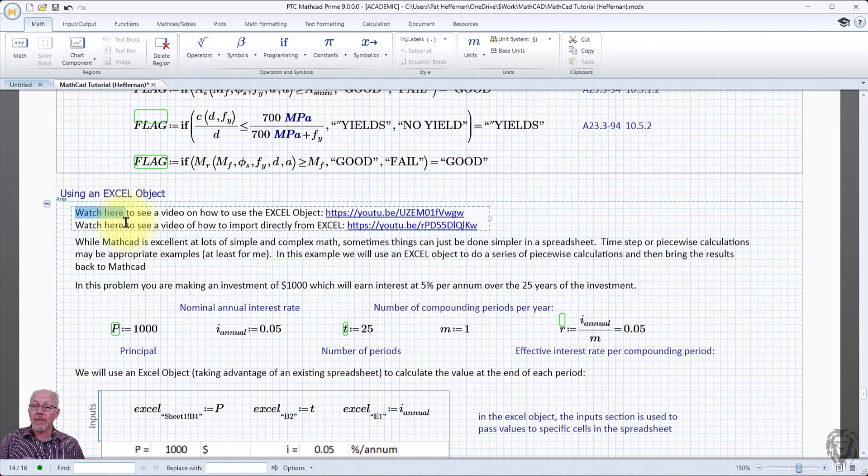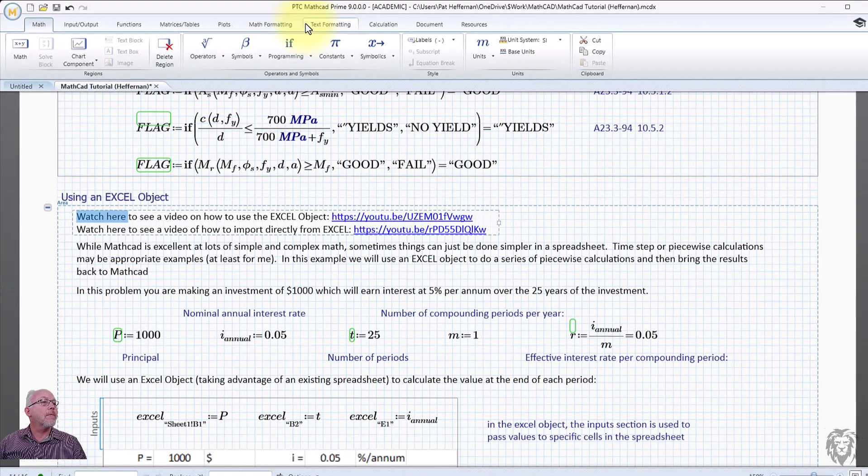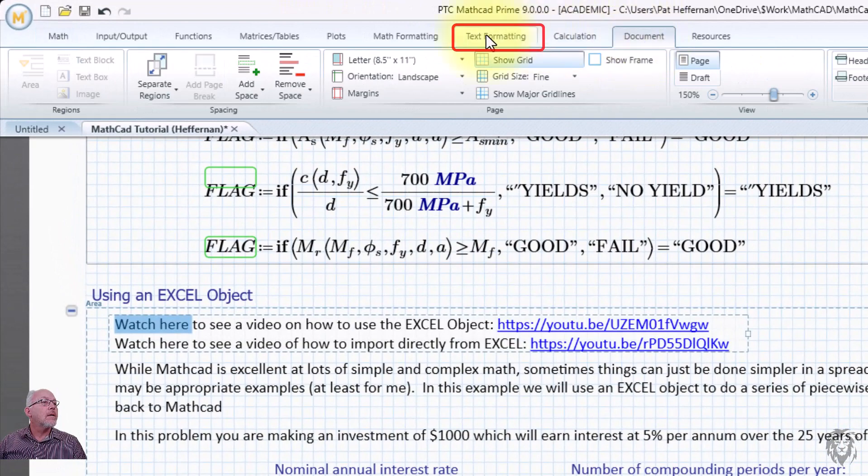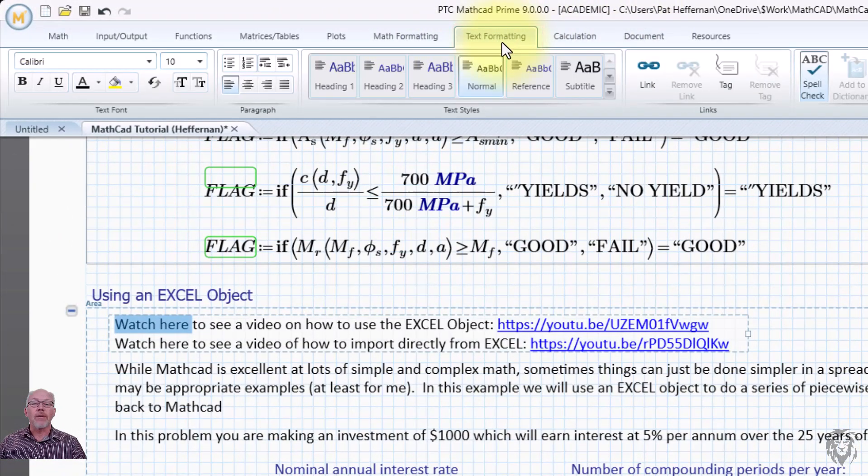So that way, if the collapsible section happens to be closed, when you hit on the hyperlink, it'll pop it open. And where are we? We're going to go up to... So in text formatting, you see the link, remove link, tag, everything here.